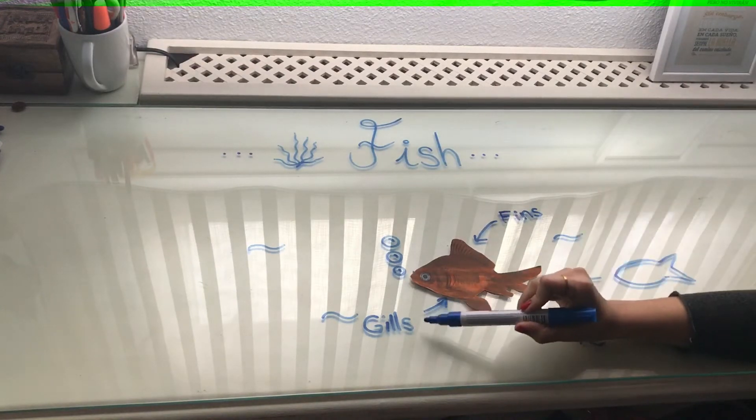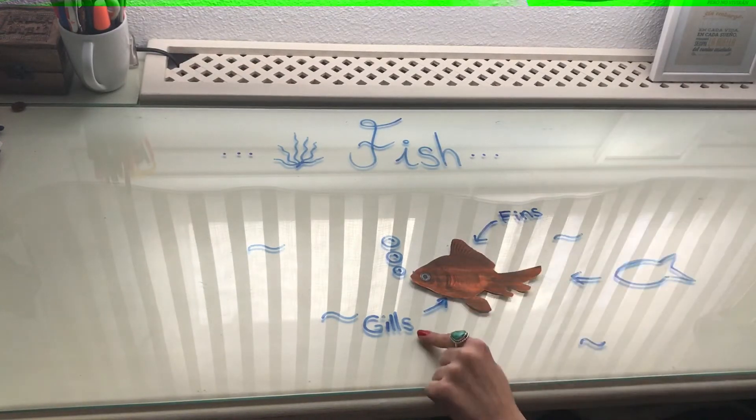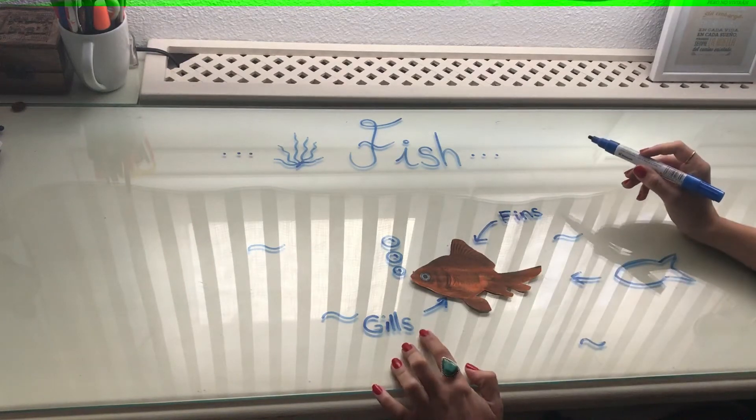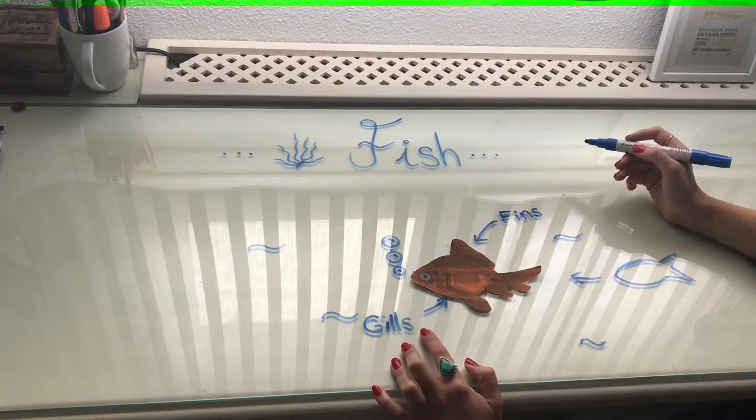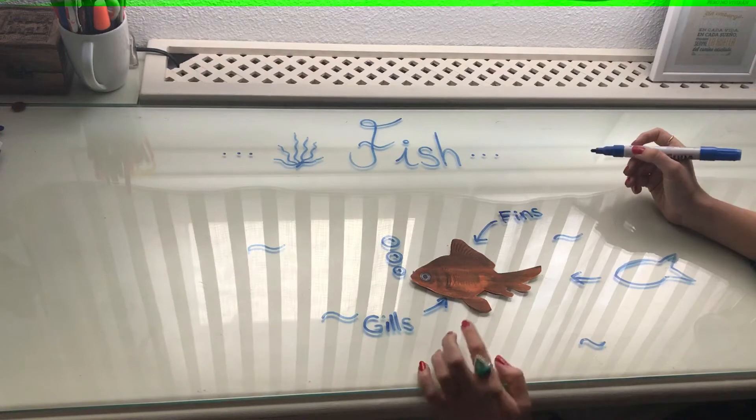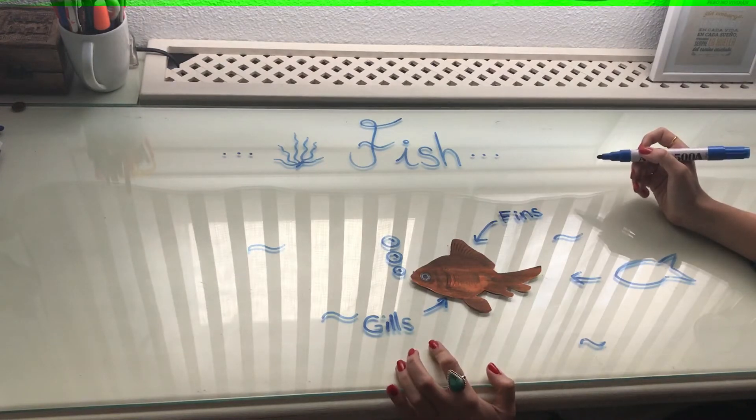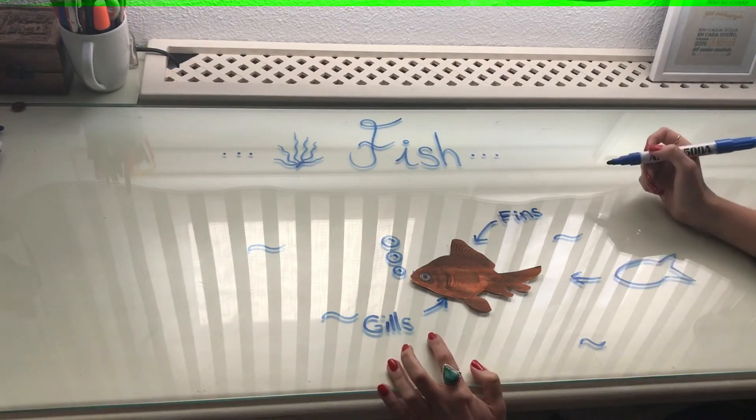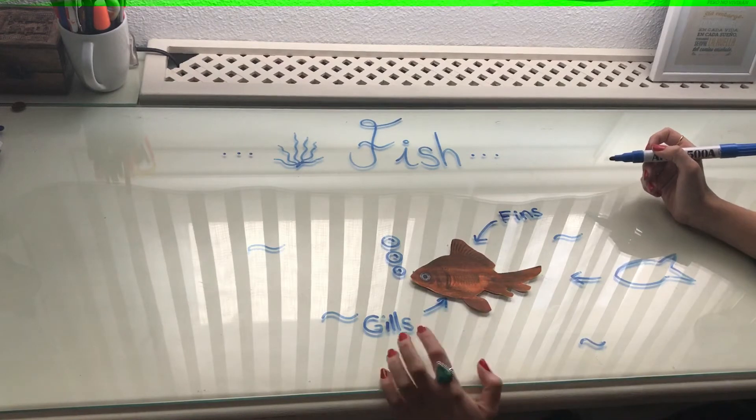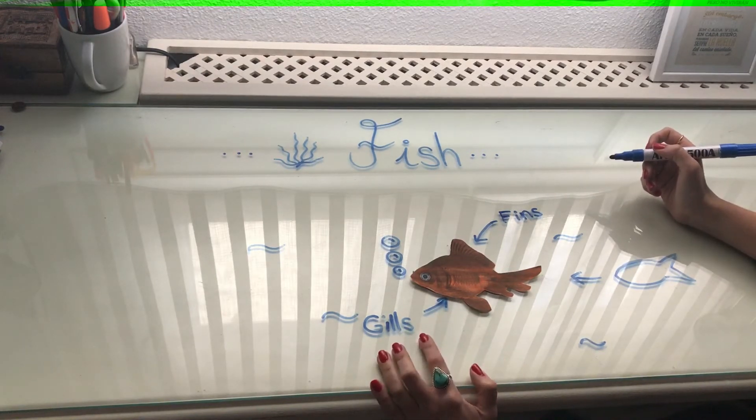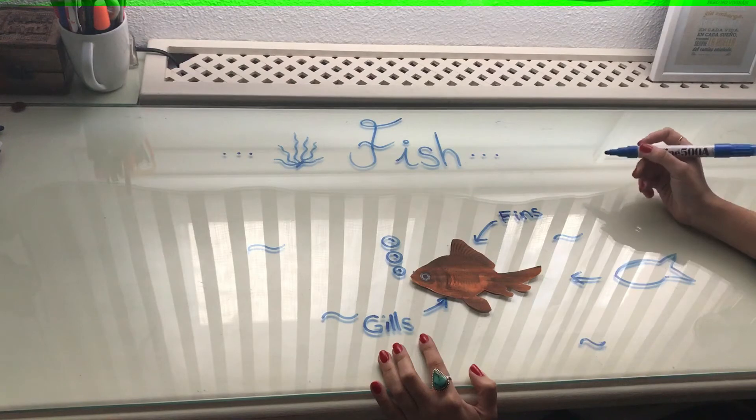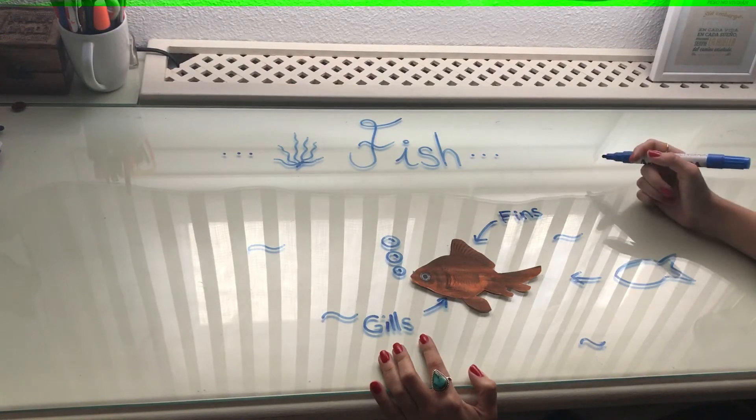But we are going to focus on gills. They are very important and this is the main reason why fishes can live and breathe underwater. They don't have lungs like we do and they have gills that they use to take the oxygen from the water.